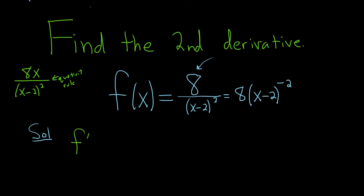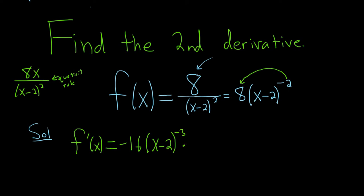So f prime of x: we bring the negative 2 down. Negative 2 times 8 is negative 16. We leave the inside untouched — x minus 2 — and subtract 1, so negative 2 minus 1 is negative 3, times the derivative of the inside function, which is 1. It's the chain rule. We can rewrite this as negative 16 times (x minus 2) to the negative 3.